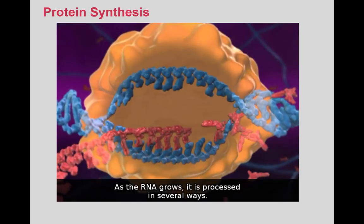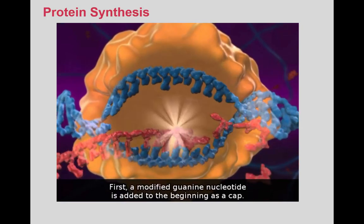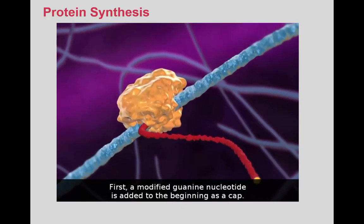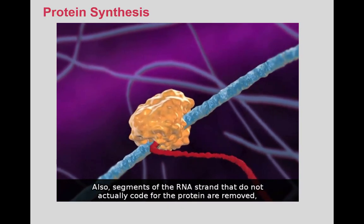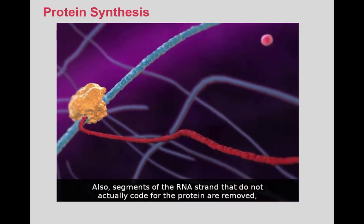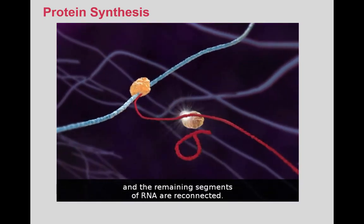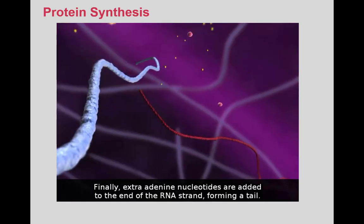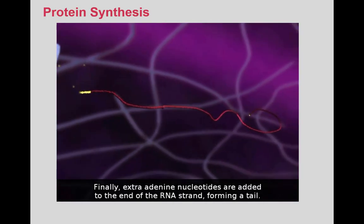As the RNA grows, it is processed in several ways. First, a modified guanine nucleotide is added to the beginning as a cap. Also, segments of the RNA strand that do not actually code for the protein are removed, and the remaining segments of RNA are reconnected. Finally, extra adenine nucleotides are added to the end of the RNA strand, forming a tail.